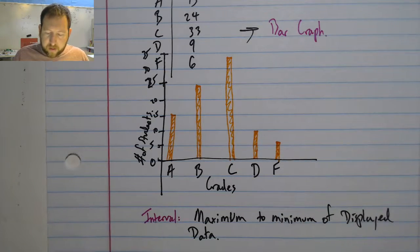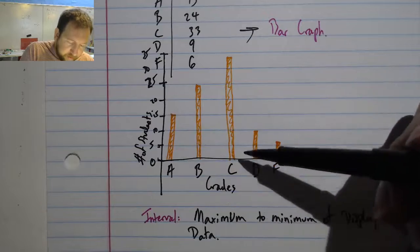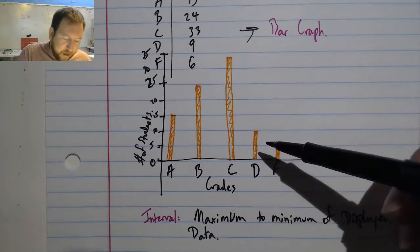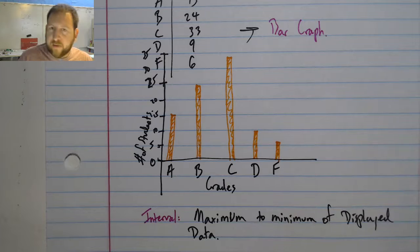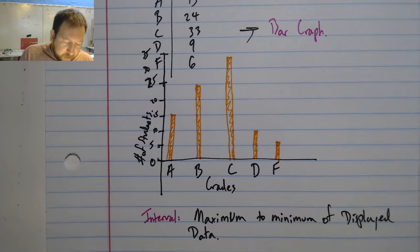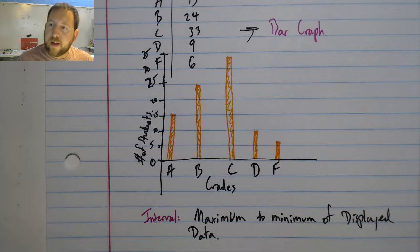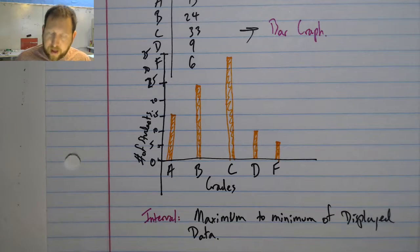And this allows me to see that the bulk of my grades are in C as I expected. But I do have a couple of D's and F's and a couple of A's as well. My spread is pretty good. And it allows me to look at my data much more clearly than I would have had I not done this.